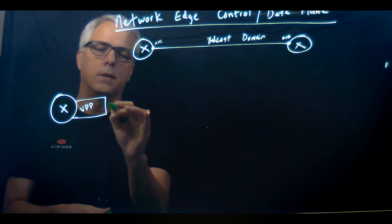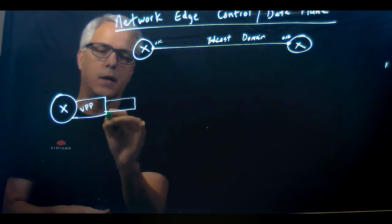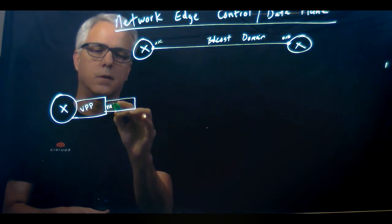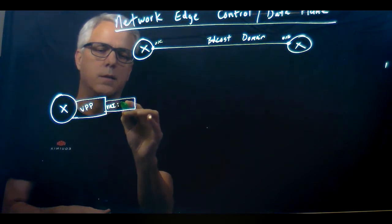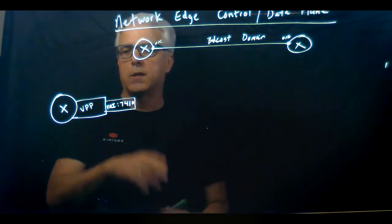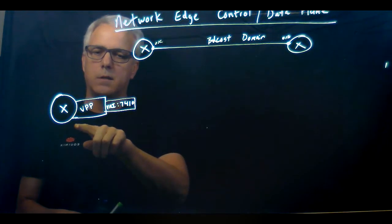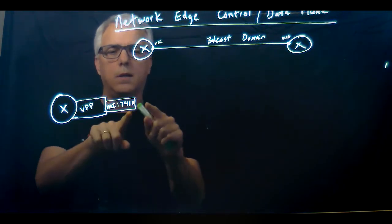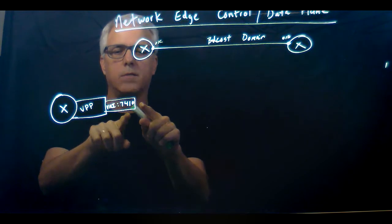Let's just call this VNI 7410. This VXLAN network identifier gets plumbed all the way down to the VPP vSwitch, and the VNI 7410 is instantiated or connected, if you will, to each interface on the device that you spin up.